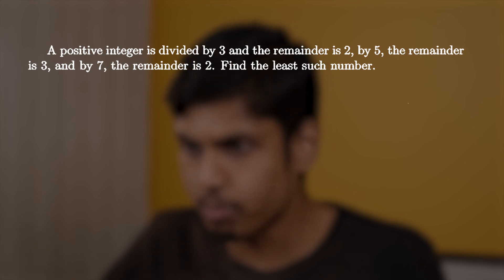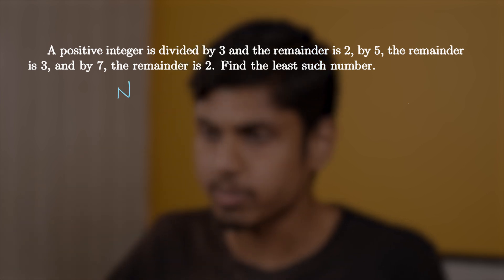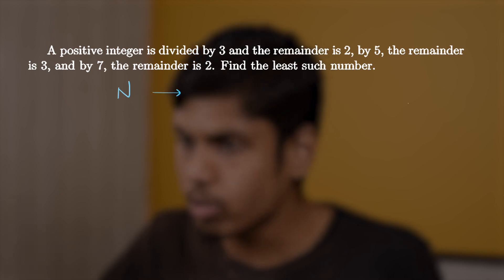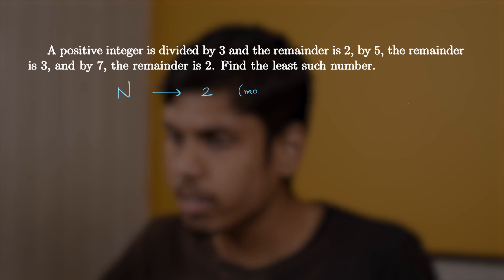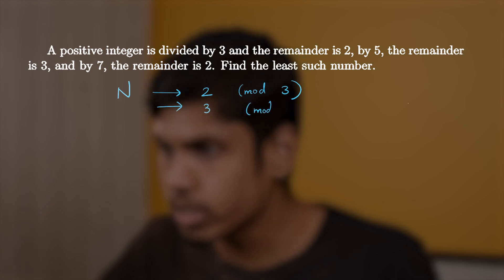So first, let's consider the number as n, the positive integer mentioned in the question. Now it leaves a remainder of 2 when divided by 3, so let's denote it by modulo 3, mod 3. And it leaves a remainder of 3 when divided by 5, so it is 3 mod 5. And it leaves a remainder of 2 when divided by 7, so 2 mod 7.